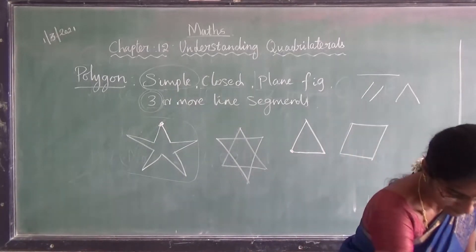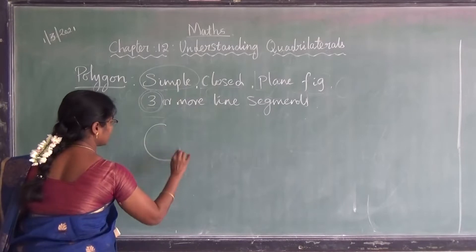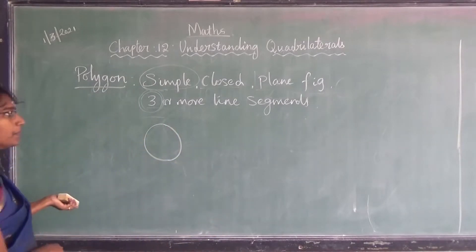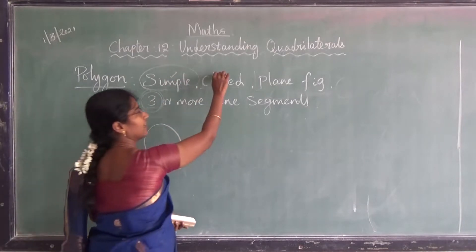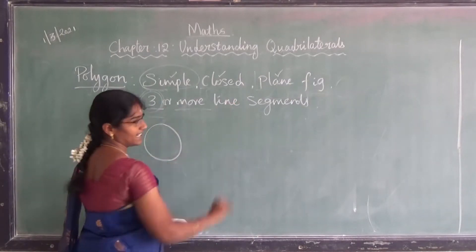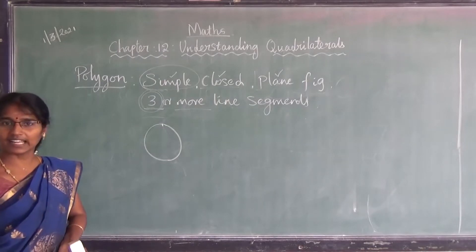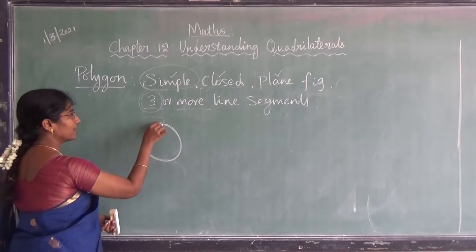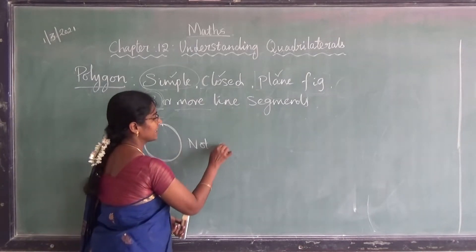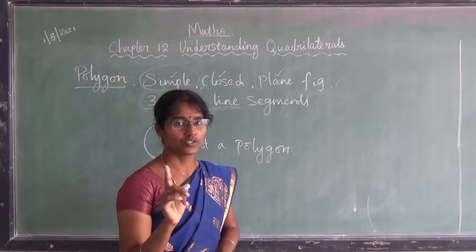Now I have one figure. Can I say this is a polygon? You all know it is a circle. Can I say the circle is a polygon? No, because for drawing a circle we need only one curved line, but for drawing a polygon we need three or more line segments. So the circle is not a polygon — it has only a curved line.